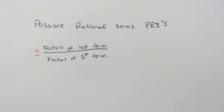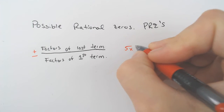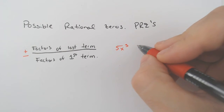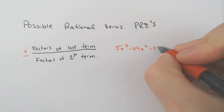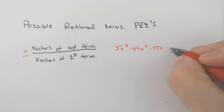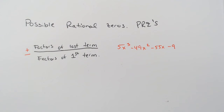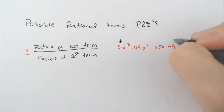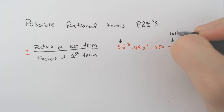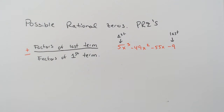So if we had a question that looked like this: 5x to the third minus 49x squared minus 55x minus 9, we don't worry about the fact that it is negative 9. We are only concerned about the 5, that first term, and the 9, that last term — those are the only two that matter.